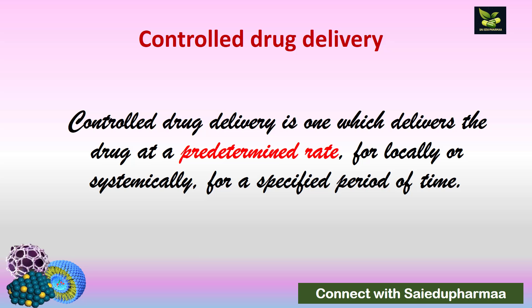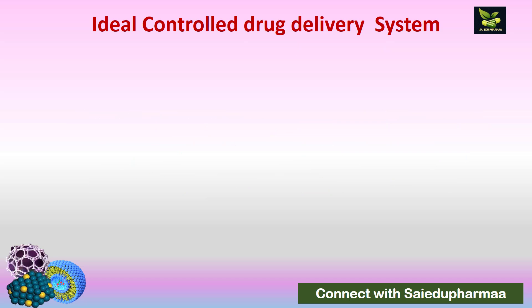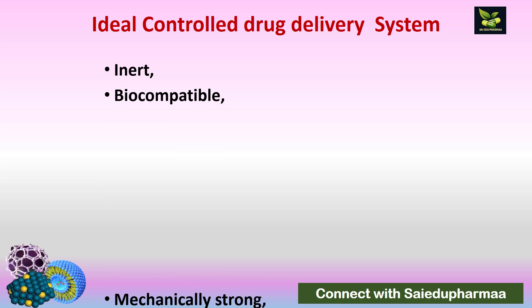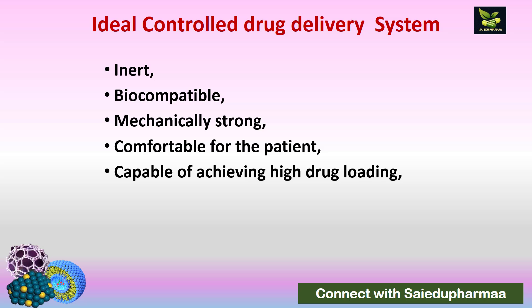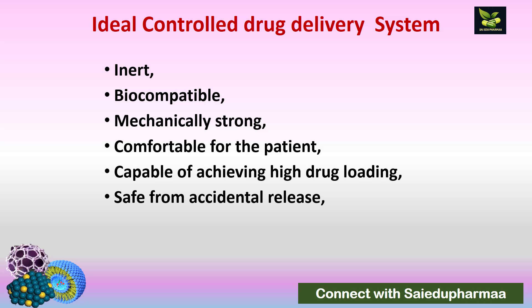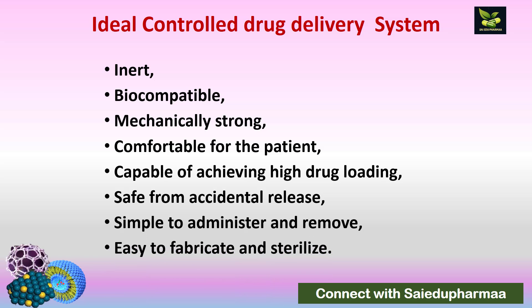Compared to conventional dosage forms, for these special reasons we prepare controlled release systems. For any ideal controlled drug delivery system, it should be inert, biocompatible, and mechanically strong. It should be comfortable for the patient to use. The system should be capable of achieving high drug loading, because when preparing a controlled delivery system we are trying to reduce dosing frequency. It should be safe from accidental release — free from dose dumping — and simple to administer and remove, and easy to fabricate and sterilize.